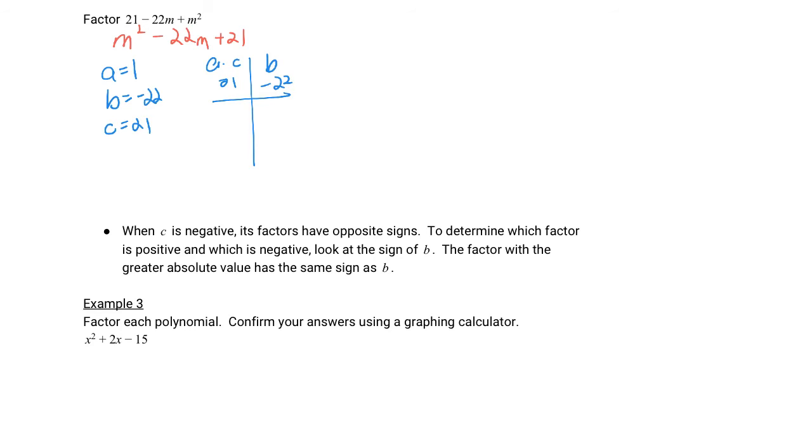a times c is positive 21, b is negative 22. So we have two negative factors. Negative 1 times negative 21 and negative 3 times negative 7. We add them up and get negative 22 and negative 10. We care the most about the first one. We get our two parentheses, variables in front, factors on the back. When we multiply it back out, m² - 21m - m + 21. Then we combine like terms, m² - 22m + 21.